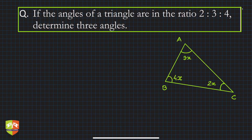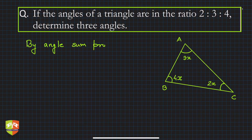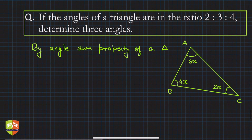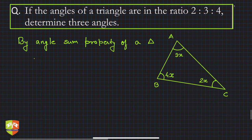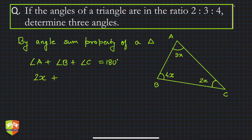Now by angle sum property — as we discussed in previous sessions — the sum of the three angles of a triangle must be 180 degrees. So angle A plus angle B plus angle C equals 180 degrees, where angle A is 2x, angle B is 3x, and angle C is 4x.